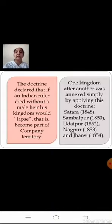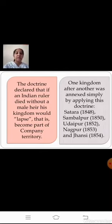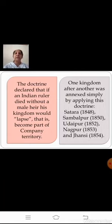The doctrine declared that if any Indian ruler died without a male heir, his kingdom would lapse — that is, become part of the company's territory. For example, just as Haidar Ali's power passed to his son Tipu Sultan, this policy said that if a ruler had no natural male heir, after his death his kingdom would be taken over by the company.